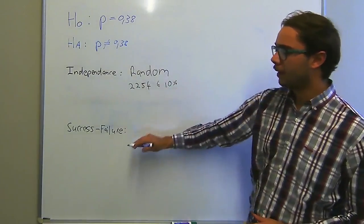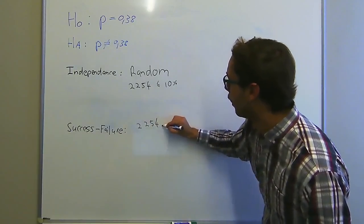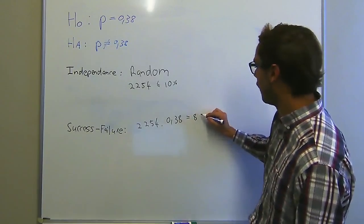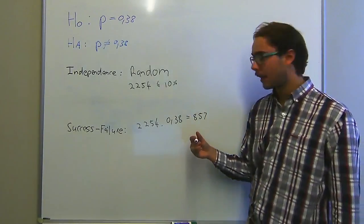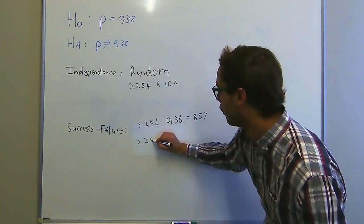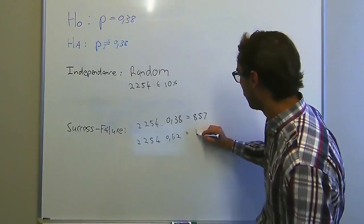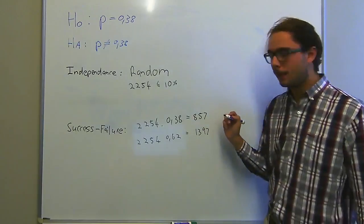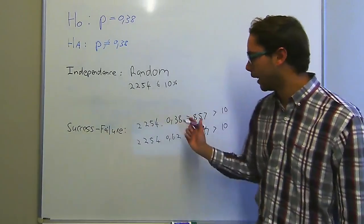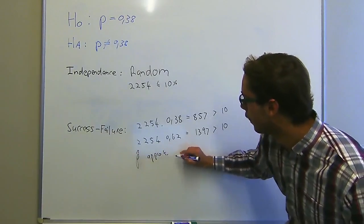Now we look at success or failure. If we look at our success, which is 2,254 multiplied by 38%, we'll see that gives us 857. And our failure in this case is 1 minus 0.38, which is 0.62. So then we say 2,254 times 0.62, and that gives us 1,397. Both of these are greater than 10, which means that this condition is also met. Therefore we can say that our P observed is approximately normal.